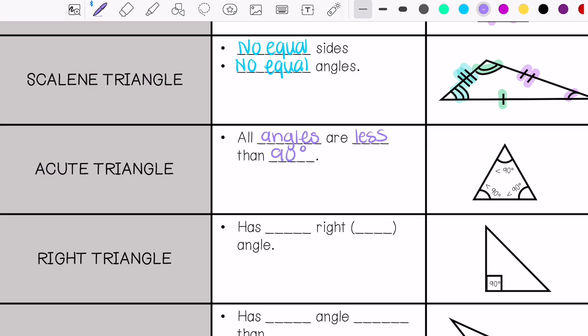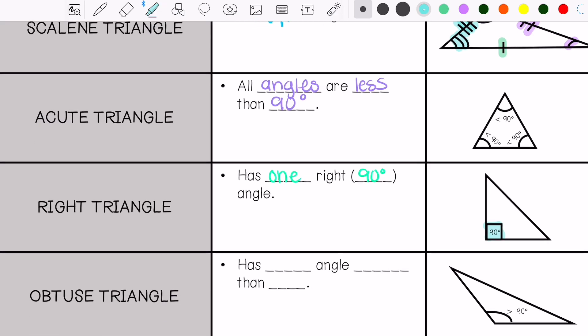So the measurement of the angles is less than 90 degrees. Then you have a right triangle, which has one right 90 degree angle. That's this one right here. These are all less than 90.